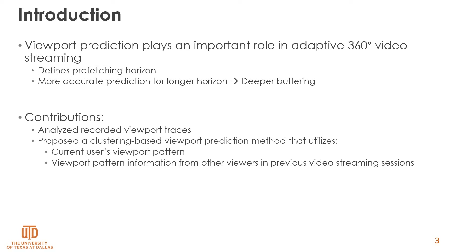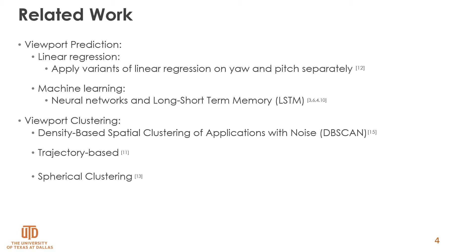Previous viewport traces are clustered on the server side. The pattern of the created clusters will be used for prediction. For each new viewer, their viewport is matched to one of the clusters, and if matched, the center of that cluster is used in the future as the predicted viewport. Viewport prediction can be based on current viewer samples, previous viewers' history, and content-specific features.